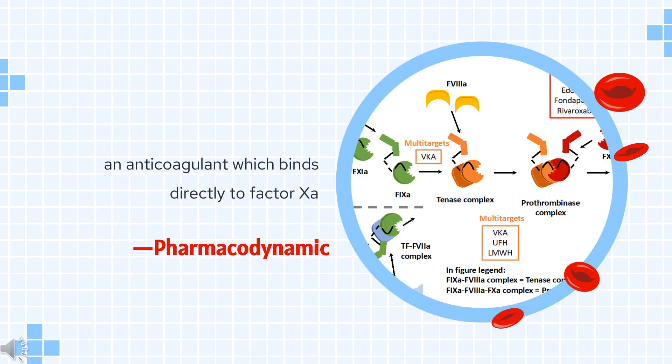Pharmacodynamics: Rivaroxaban is an anticoagulant which binds directly to factor Xa. Thereafter, it effectively blocks the amplification of the coagulation cascade, preventing the formation of thrombus.